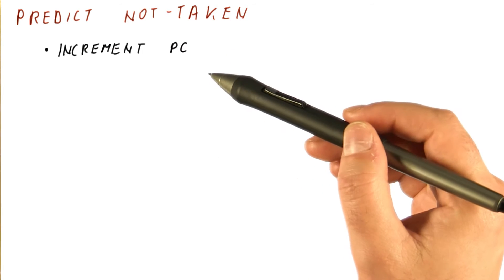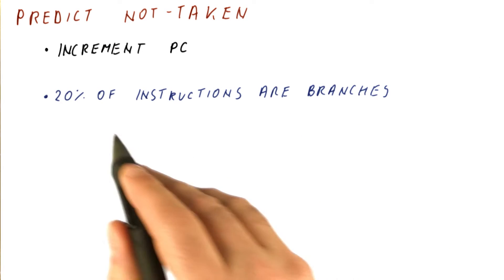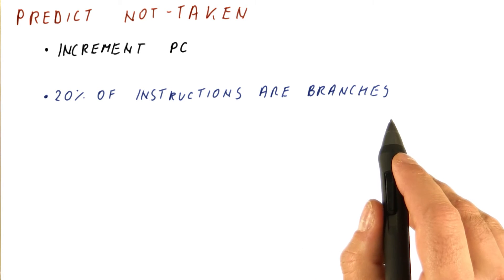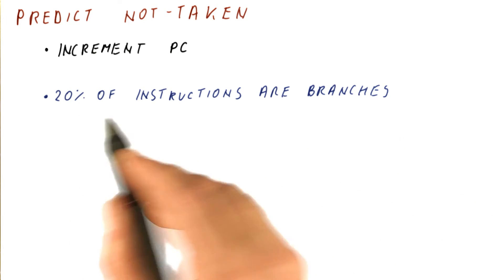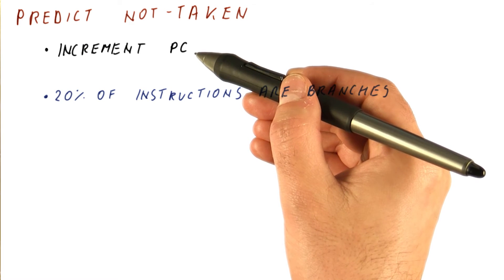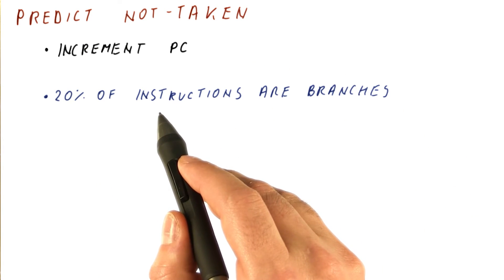But the question is, how accurate is it? A rule of thumb is that about 20% of all instructions are branches. So 80% of the time, this predictor will be correct because it's simply not a branch instruction.